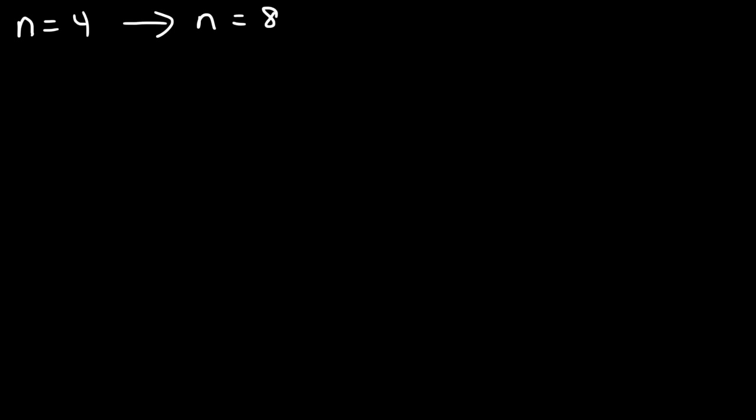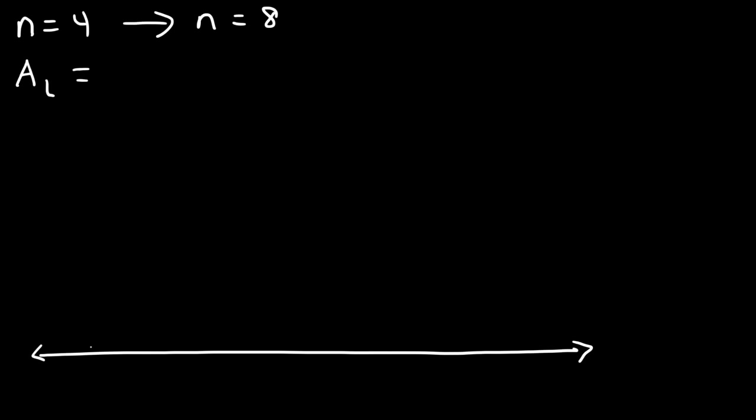The left endpoint result of 112 is much less than 170.67, and the right endpoint of 240 is much higher, but averaging gives a good approximation. Now what happens if we increase n from 4 to 8? If you increase n, the Riemann sums become more accurate, closer to 170.67. As n approaches infinity, the Riemann sum approximation becomes equal to the actual area. Let's calculate the area using left endpoints with n = 8.